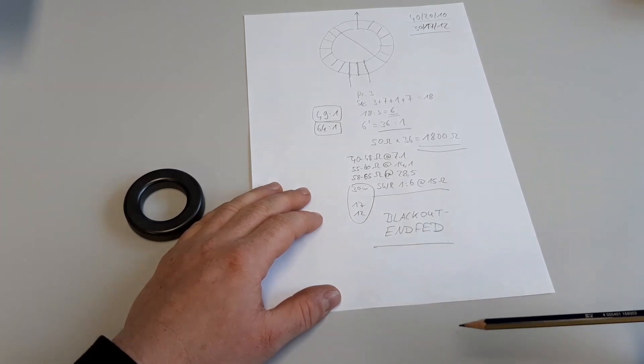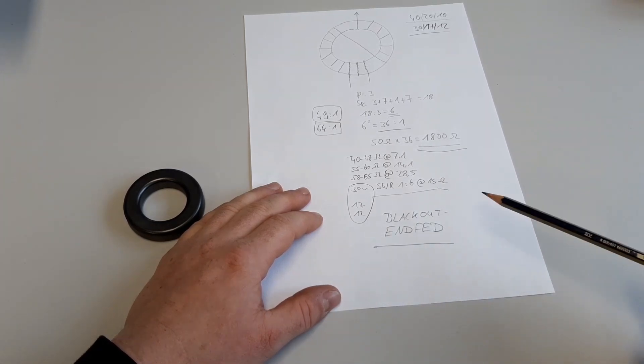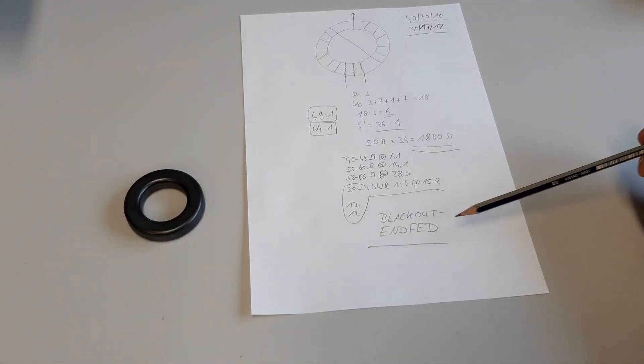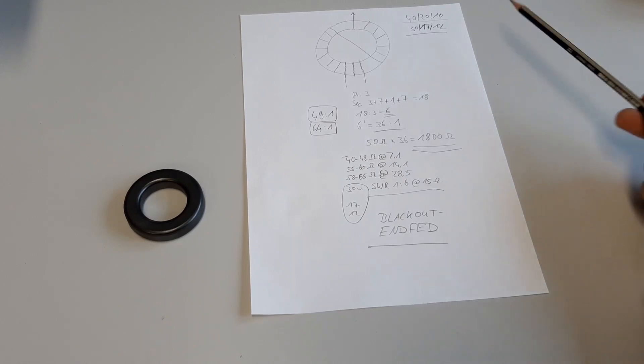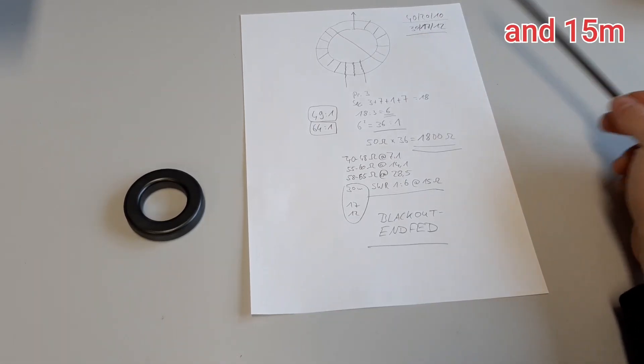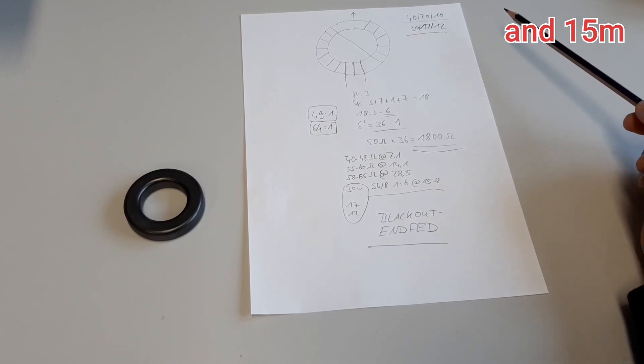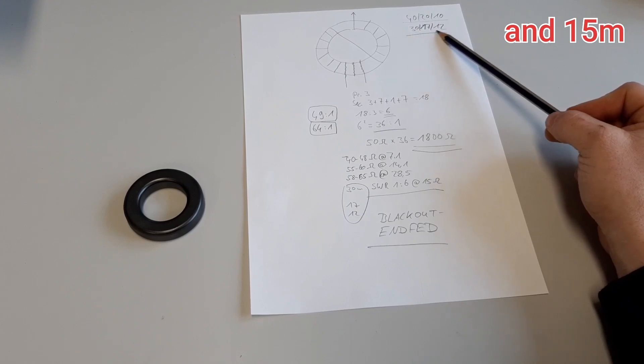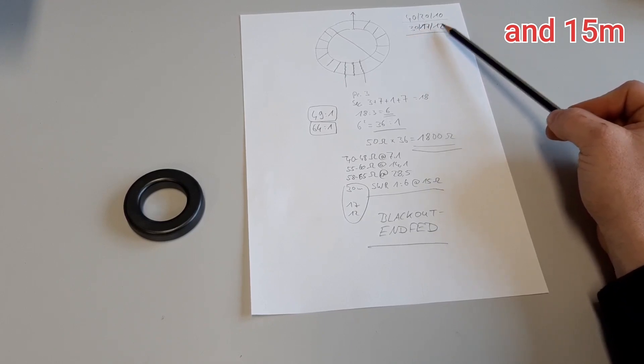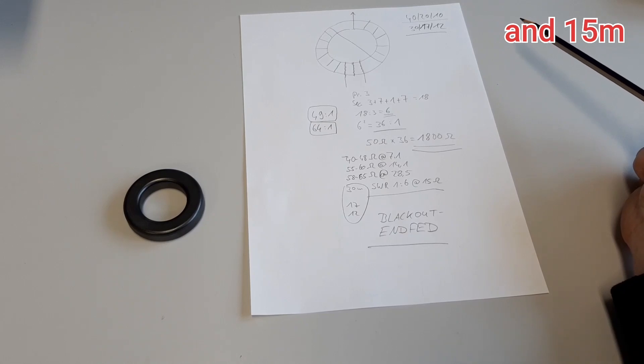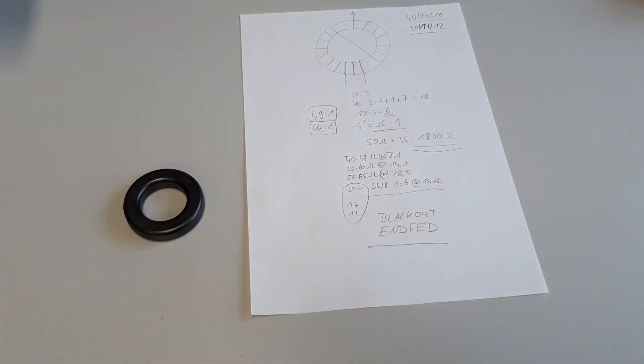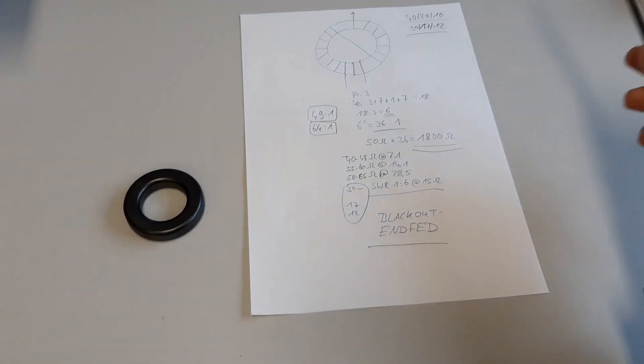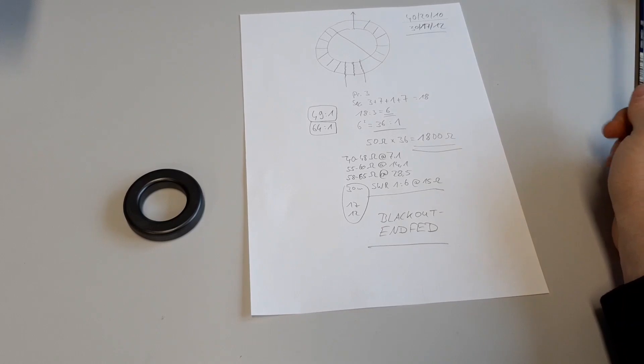And I think it's a very good antenna for emergency. If you are in an emergency situation you can use this simple antenna to get in contact also on 30, 17, and 12. But I highly recommend to use this antenna on 40, 20, and 10, because there is no real resonance on 30, 17, and 12. It's not made for these bands.